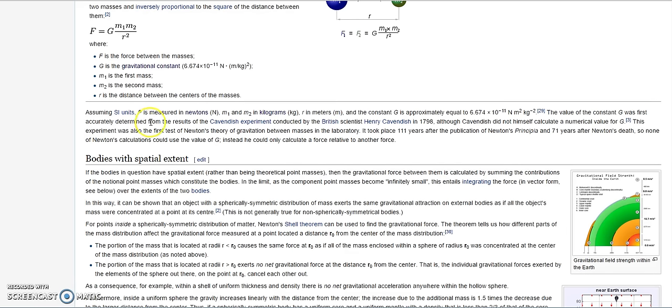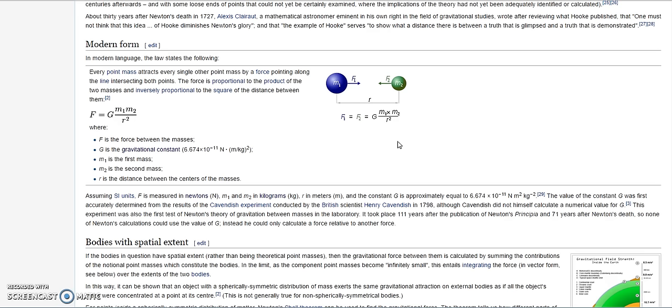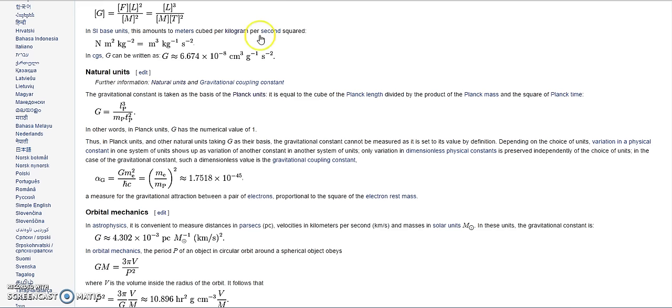So assuming SI units, F is measured in Newtons. M1 and M2 in kilograms are in meters, and the constant G is approximately equal to the equation mentioned here. The value of the constant G was first accurately determined from the results of the Cavendish experiment conducted by the British scientist Henry Cavendish in 1798, although Cavendish did not himself calculate a numerical value for G. This experiment was also the first test of Newton's theory of gravitation between masses in the laboratory. It took place 111 years after the publication of Newton's Principia and 71 years after Newton's death. So none of Newton's calculations could use the value of G. Instead, he could only calculate a force relative to another force. Because they're basically saying this is not real for people who could really use their own discernment. Like I said, this is calculated as numerical value one, especially in this equation here.